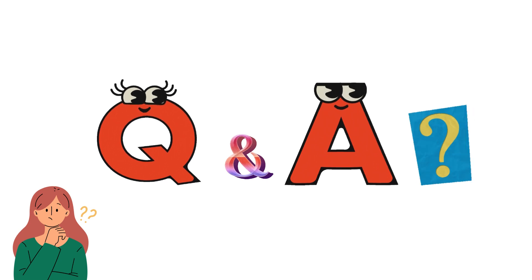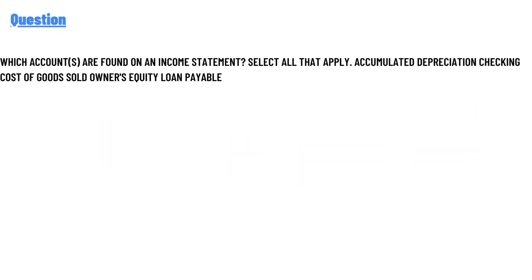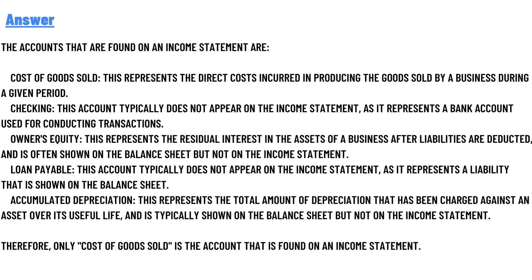Our today's question is: which accounts are found on an income statement? Select all that apply. The options are: accumulated depreciation, checking, cost of goods sold, owner equity, and loan payables. The correct answer of the question is the accounts that are found on an income statement.